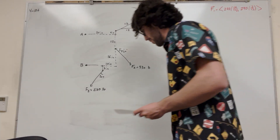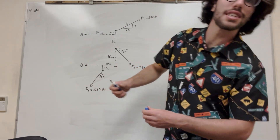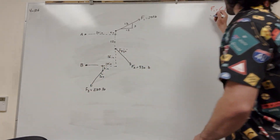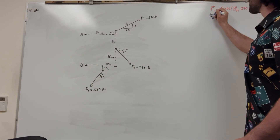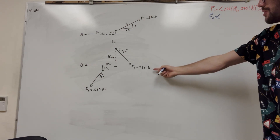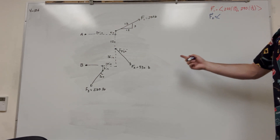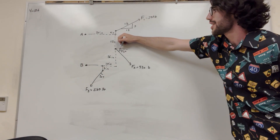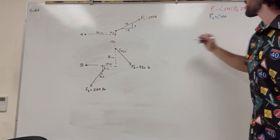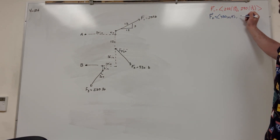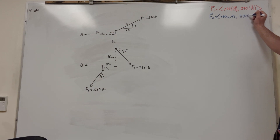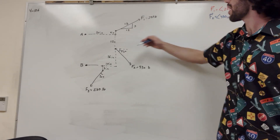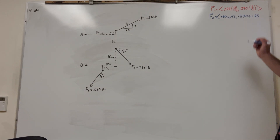So let's do the same thing with Force 2 and Force 3. Force 2 is at a 45-degree angle. So X is going to be positive — 330 cosine of 45, which gives the X direction component. And then 330 sine of 45 for the Y direction, but it's going negative in the Y, so we have to put a negative out front.